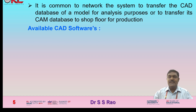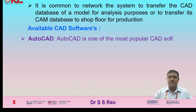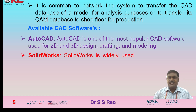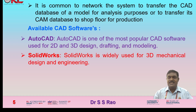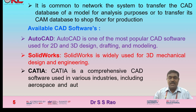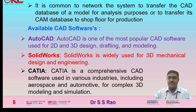Available CAD softwares: AutoCAD is one of the most popular CAD softwares, used for creating 2D and 3D designs, drafting, and modeling. SOLIDWORKS is widely used for 3D mechanical design and engineering. CATIA is a comprehensive CAD software used in various industries including aerospace and automotive, for complex 3D modeling and simulation.